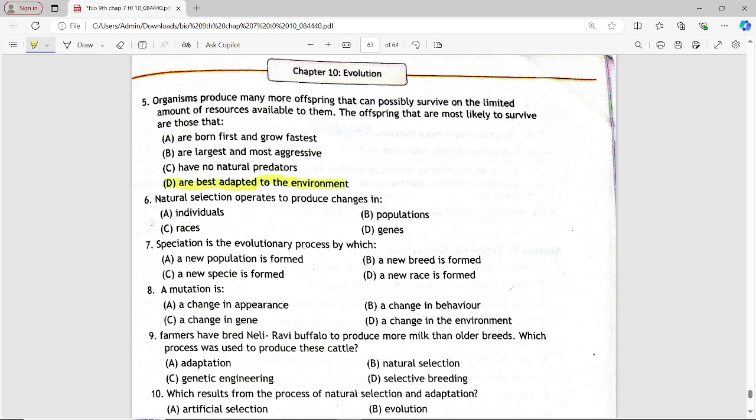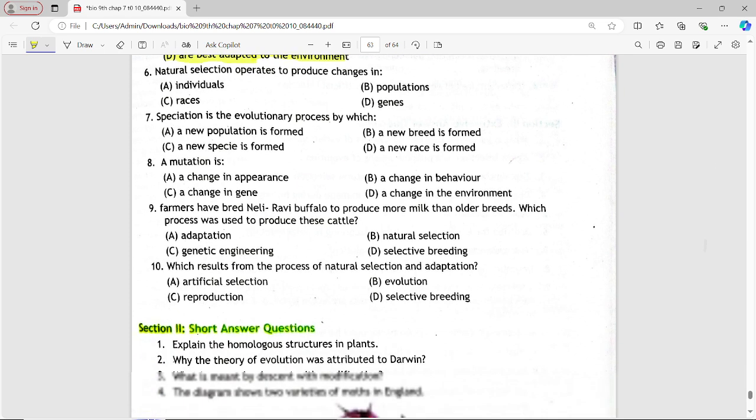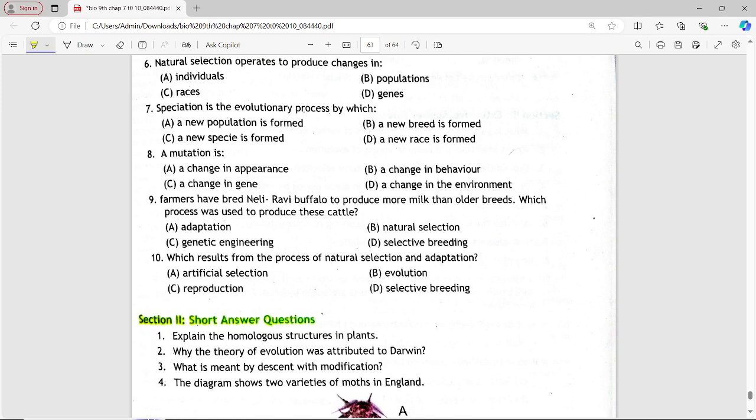Next MCQ is, natural selection operates to produce changes in. Options are: individuals, populations, races, genes. Answer is option B, populations.